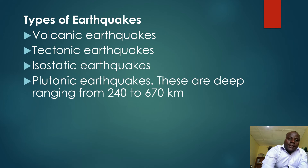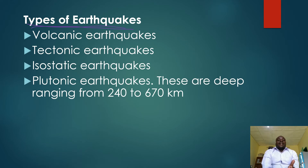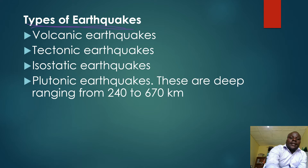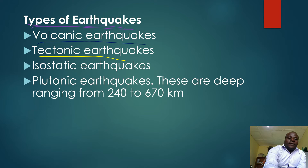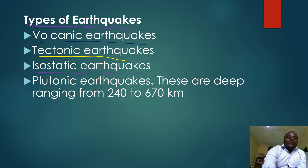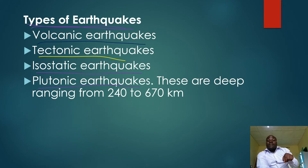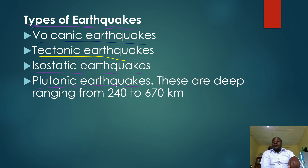We have types of earthquakes. The types depend on causes. We have volcanic earthquakes, which are caused by volcanic eruptions. Tectonic earthquakes are caused by the movement of tectonic plates. We have isostatic earthquakes, caused by isostasis. Then we have plutonic earthquakes, which are deep — ranging from 240 to 670 kilometers deep. We call them plutonic because of their depth; they affect the deeper areas.